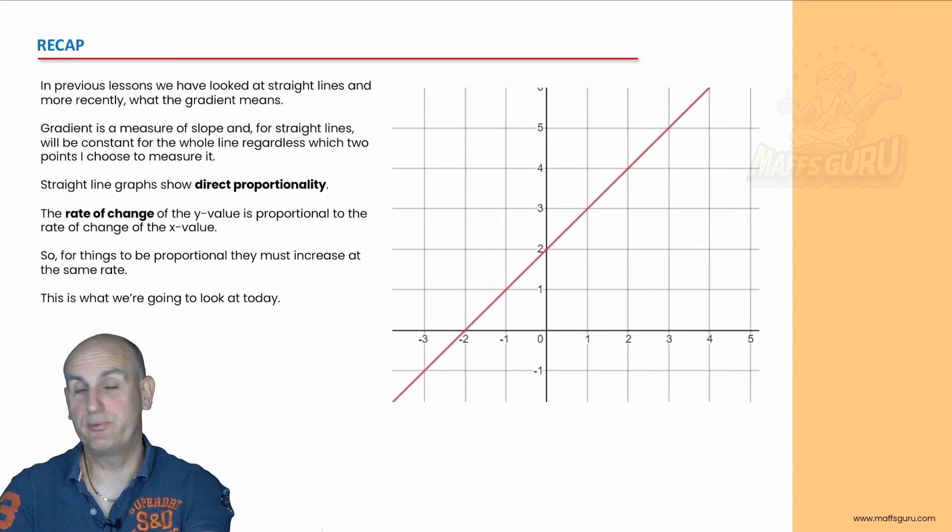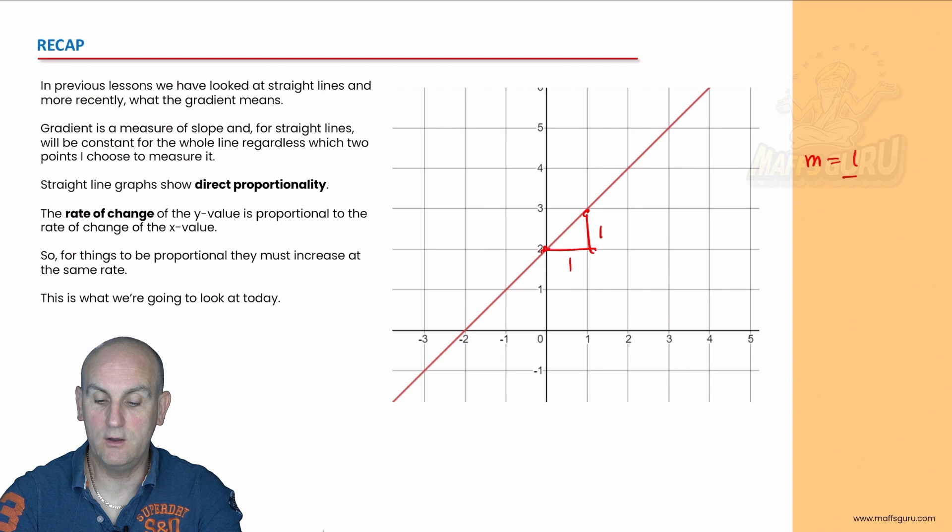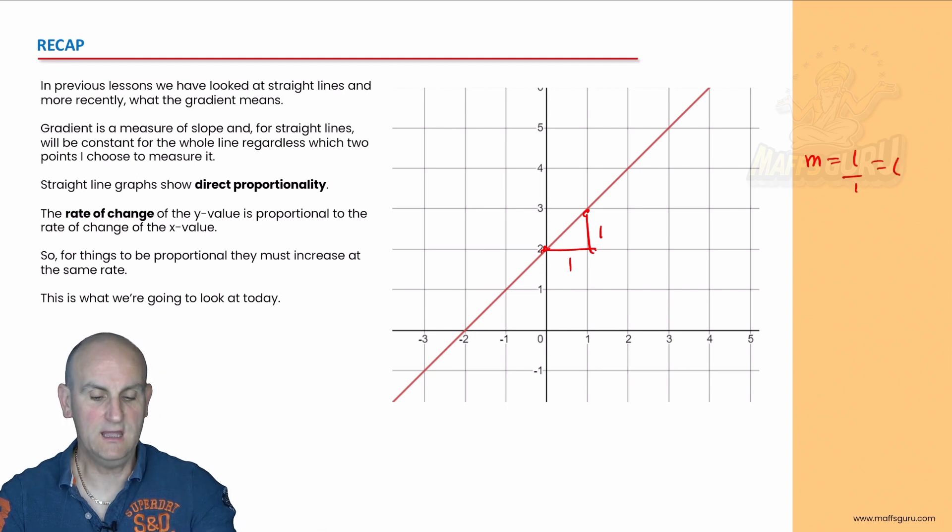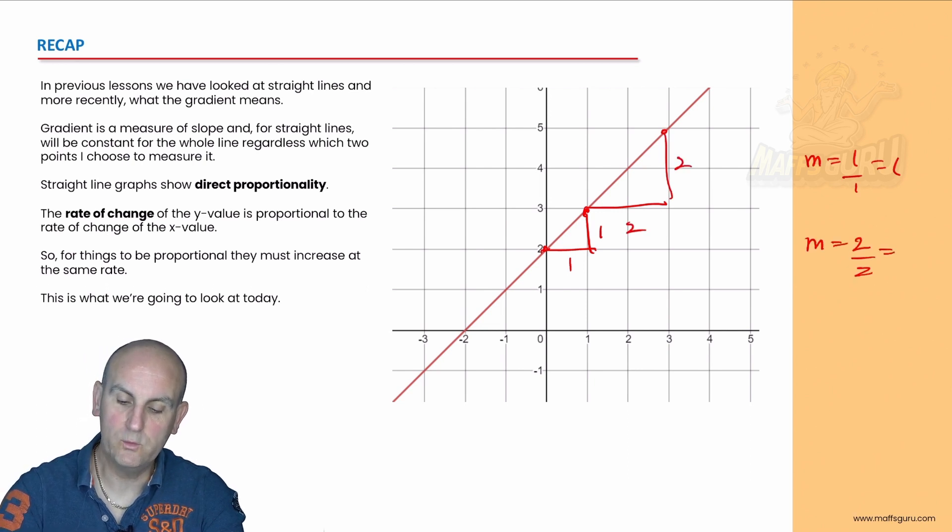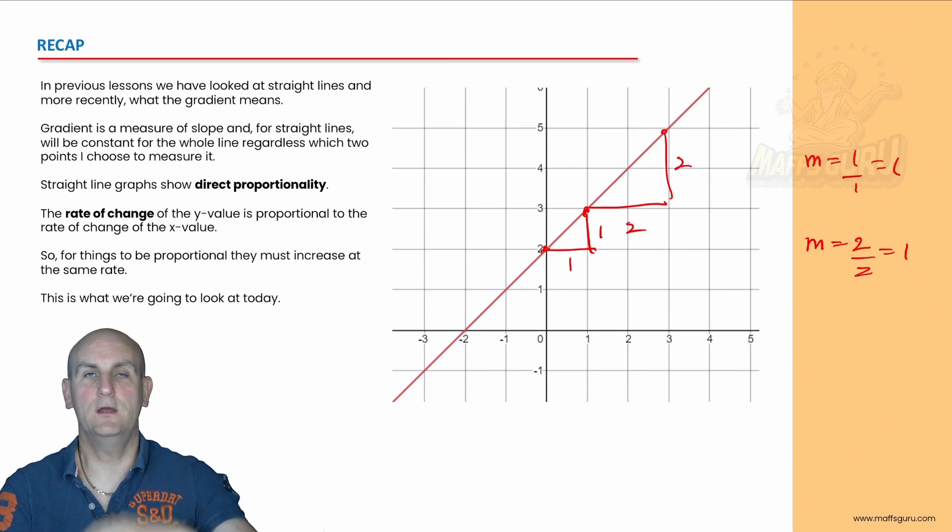OK, so to recap our previous video. Really important, we now know that gradient is basically rise over run. So if I take two points between here and here and then look at my rise and my run, I can find my gradient is one on one or one. And it shouldn't matter which points I choose on this line, two and two. My gradient becomes two on two, which is one.